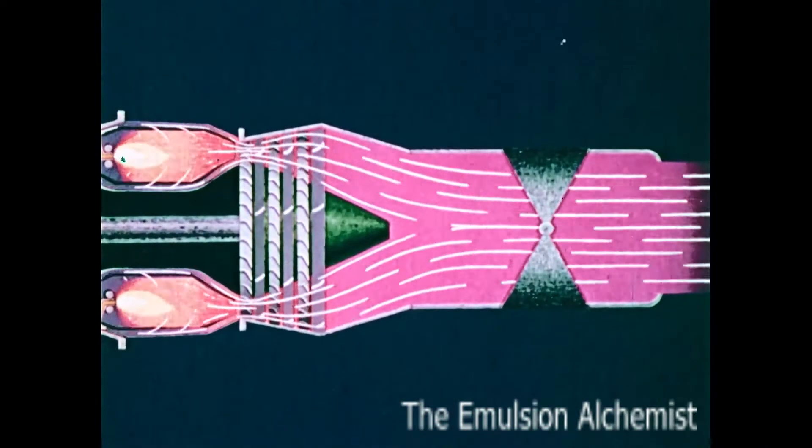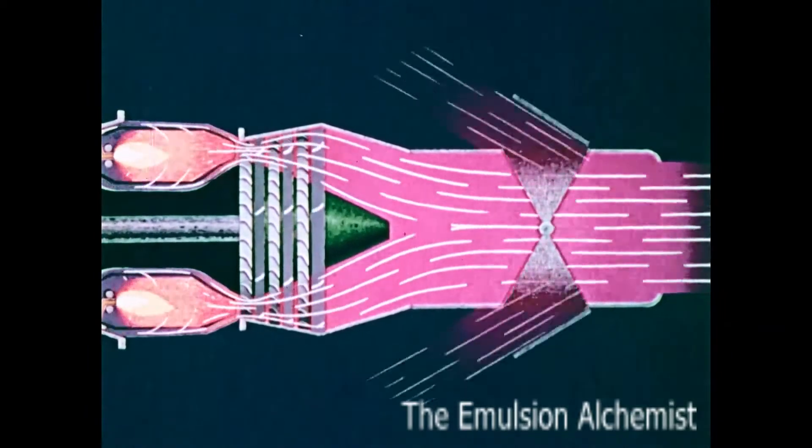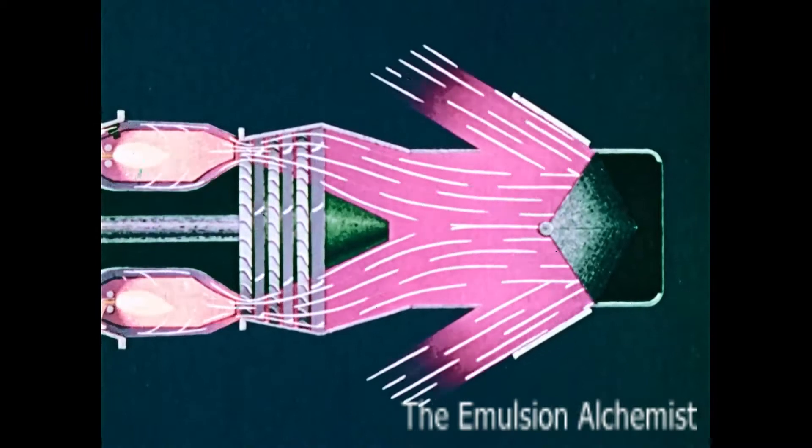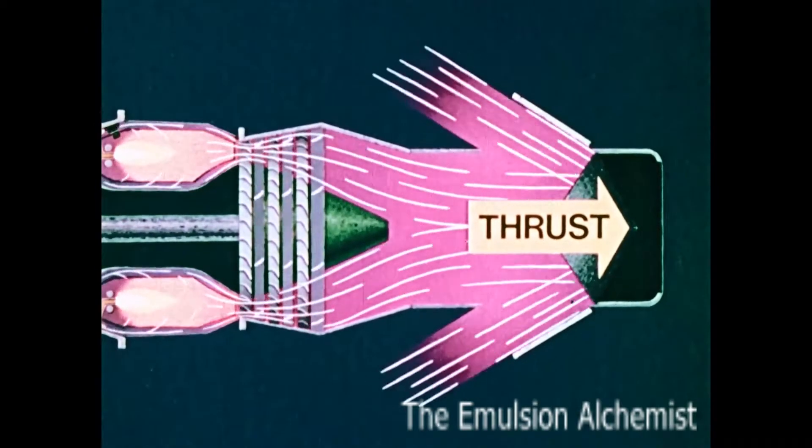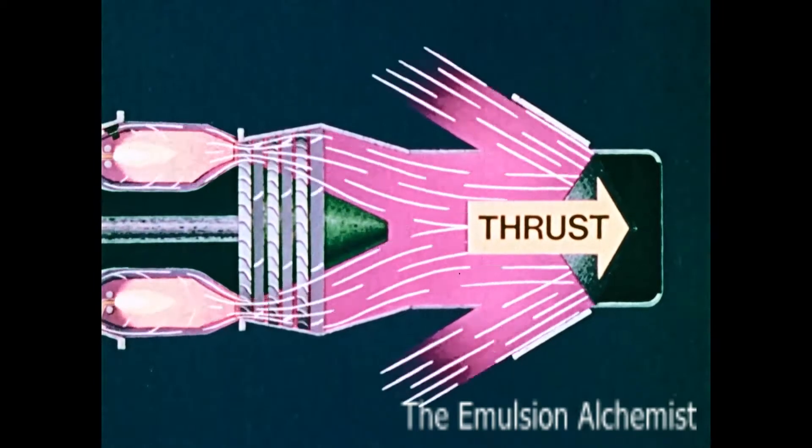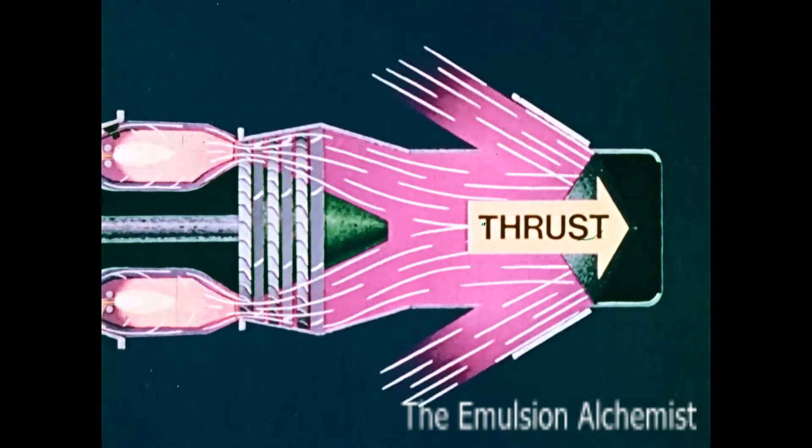Reaction also makes a thrust reverser work on a turbojet engine. When the plane is touched down, the reverser is moved so that it deflects the exhaust gases, reversing their direction. The thrust now opposes the forward motion of the airplane and slows it down, not only saving the brakes, but also providing additional safety on slippery runways.